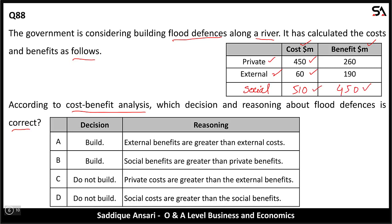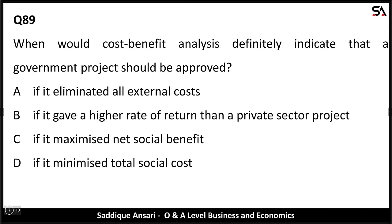Options C and D are the possible answers. Option C says private costs are greater than external benefits — but the government is comparing social costs and social benefits, not private costs and external benefits, so C cannot be the answer. Option D: social costs are greater than social benefits — social costs are 510 and social benefits are 450, hence D is the correct answer.